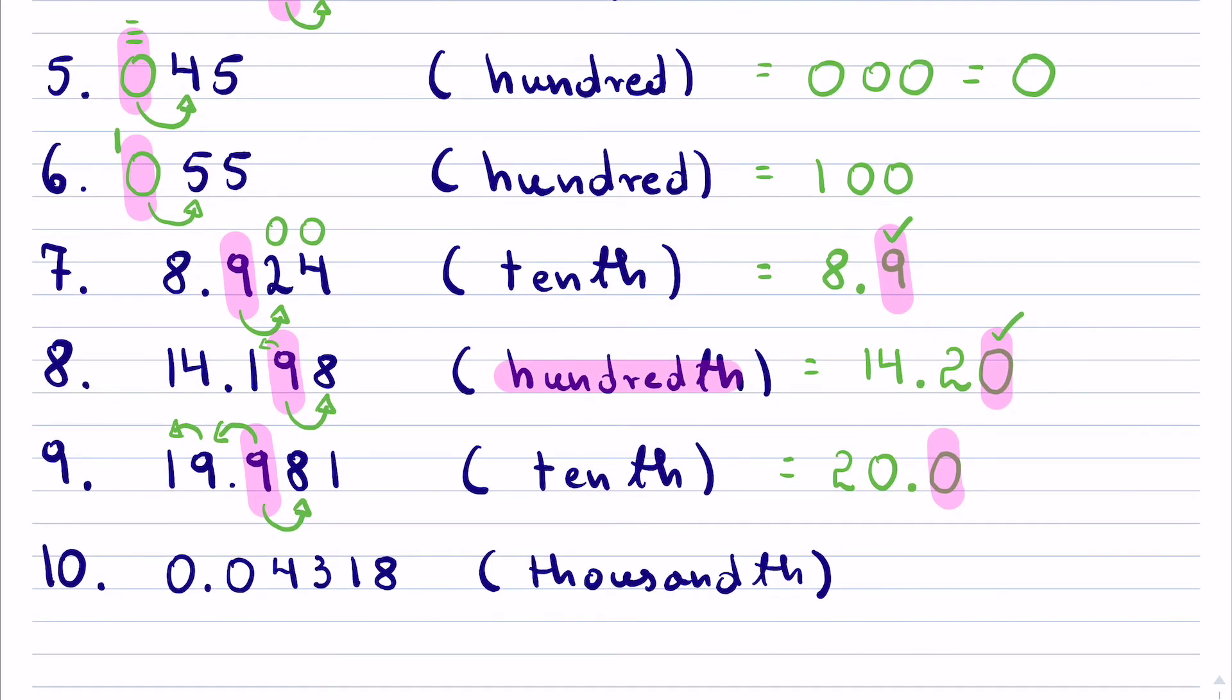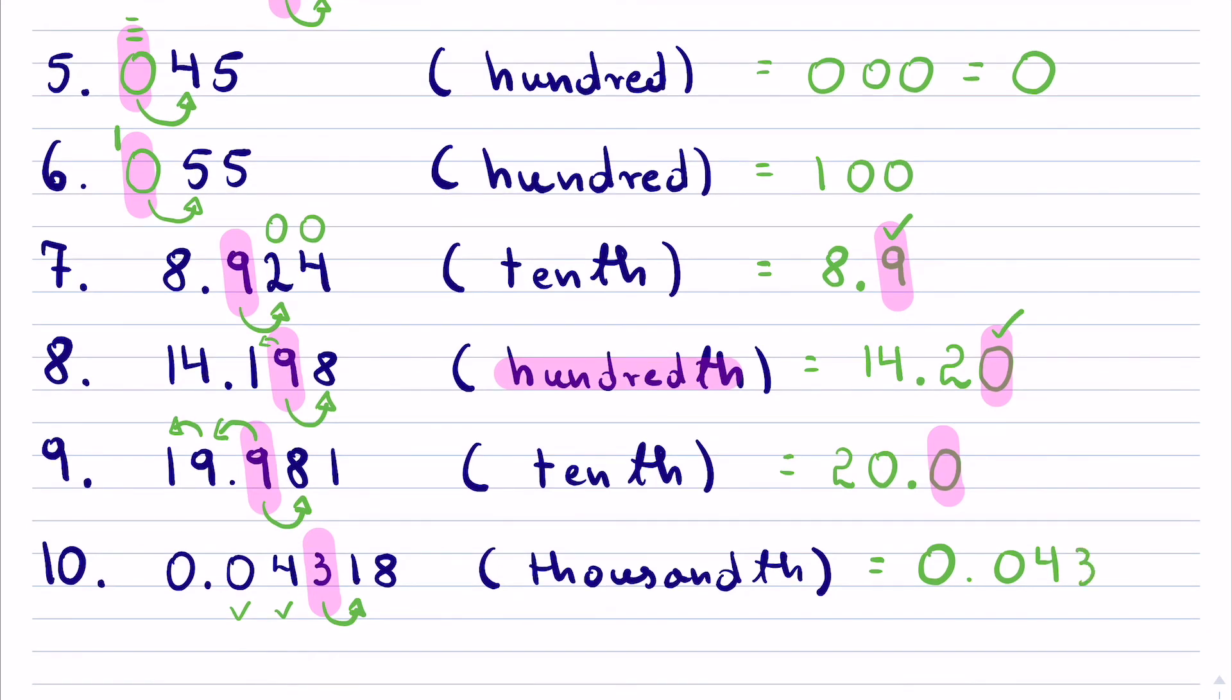The last question: rounding 0.04318 to the thousandths. We have tenths, hundredths, thousandths right here. I will look next door - it's a 1, so I will not do anything with the 3. The answer will be 0.043, and I stop with that 3 because that's the thousandths place value.